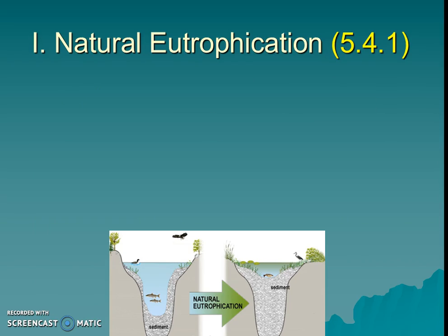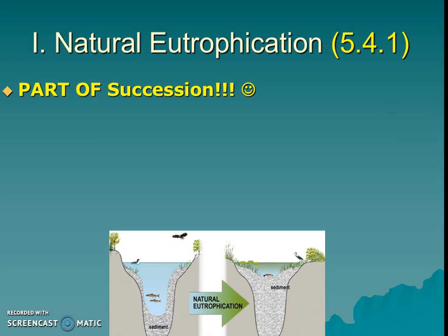As we begin, we need to understand that eutrophication, to a certain degree, is a very natural process. It's just part of succession — going from a disturbance and changing the ecosystem over time. This eutrophication that's natural is the natural changing and aging of a body of water.